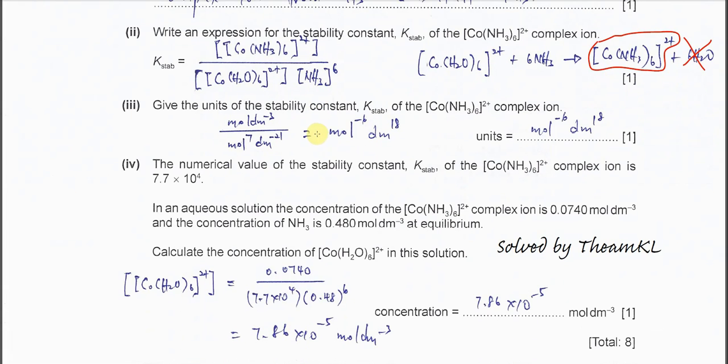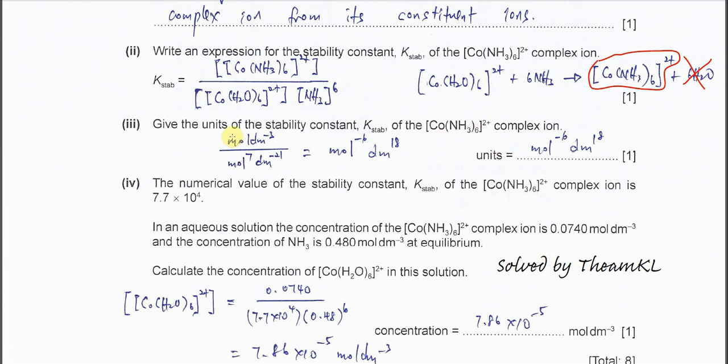Part 3: give the units of the stability constant of the hexa-amine cobalt-2 complex ion. You just need to use mole per dm cubed. So it's mole per dm cubed over mole to the power of 7, dm to the power of negative 21. Therefore, eventually you get mole to the power of negative 6, dm to the power of 18.